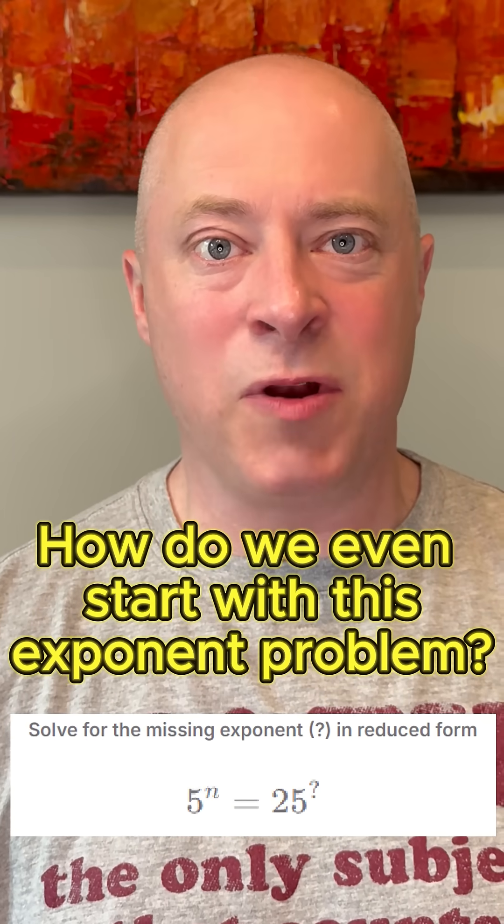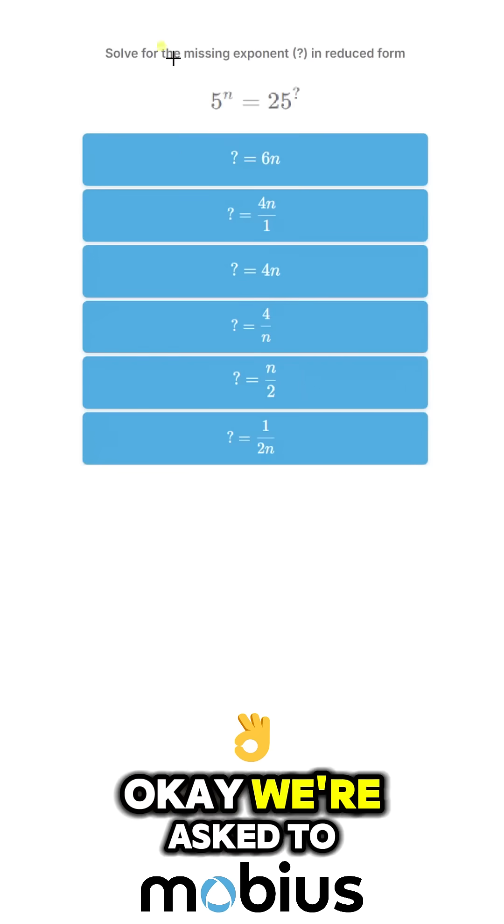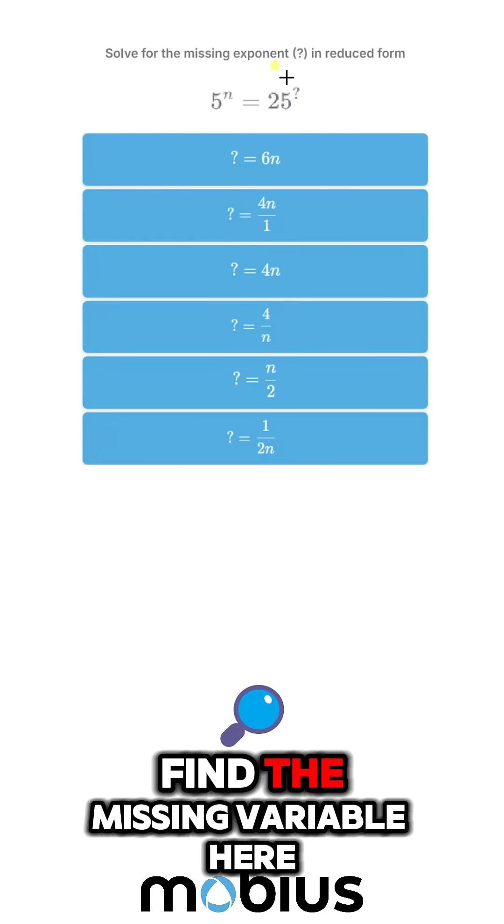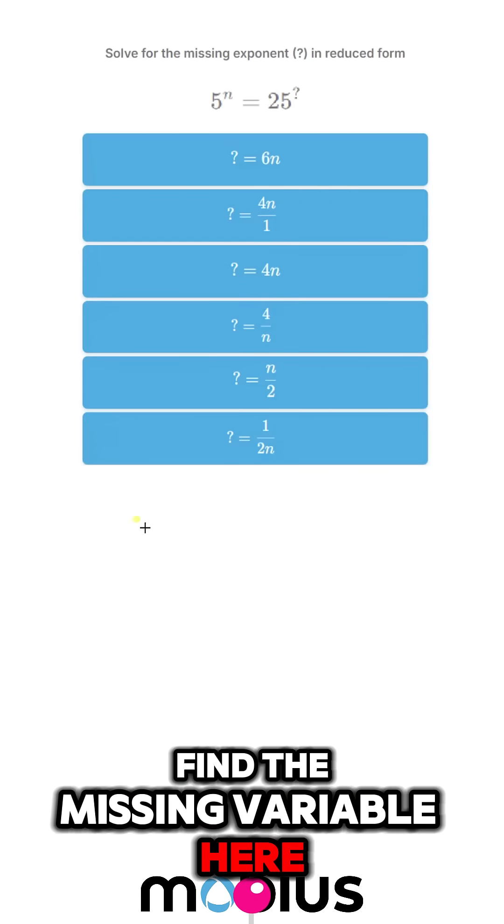How do we even start with this exponent problem? We're asked to find the missing variable here.